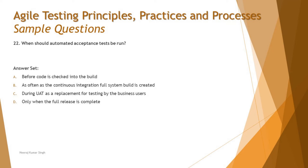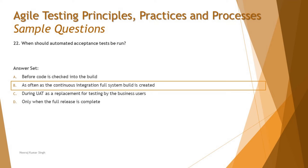Option D says 'only when the full release is complete' — again, that refers to the whole thing, and is also not the right point. So the best applicable time as per the given information is B: as often as the continuous integration full system build is created. That time can be anything — the entire release, a collection of sprints, or the end of release one — whatever is best applicable.